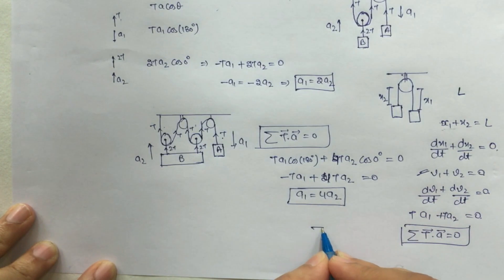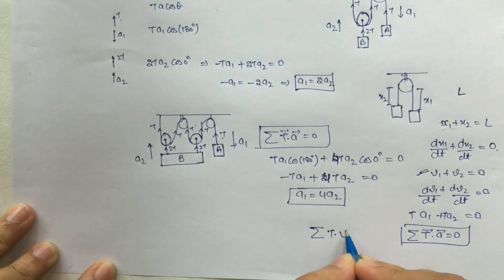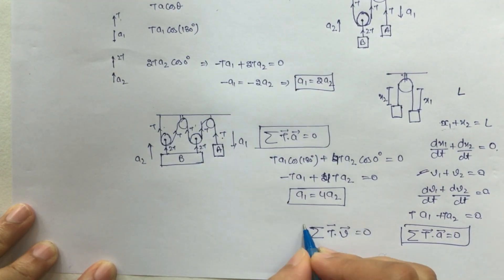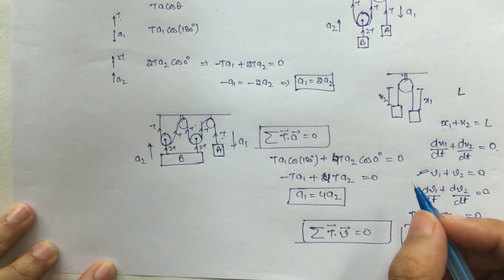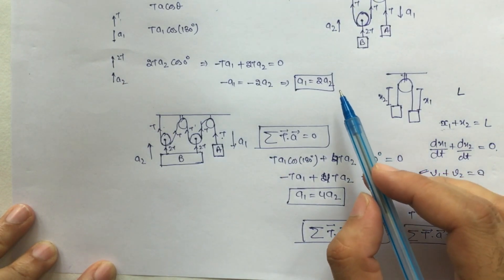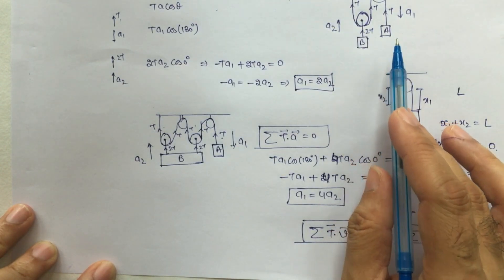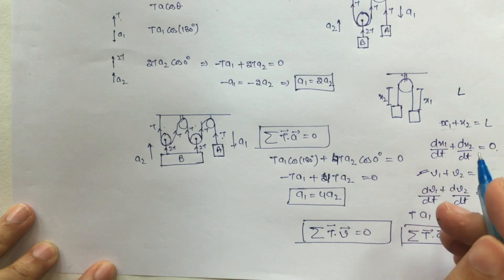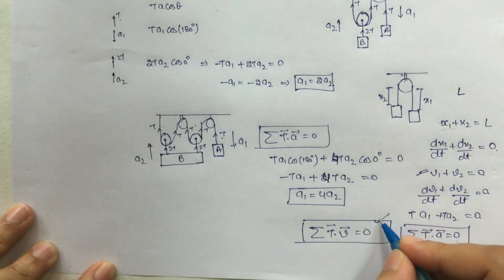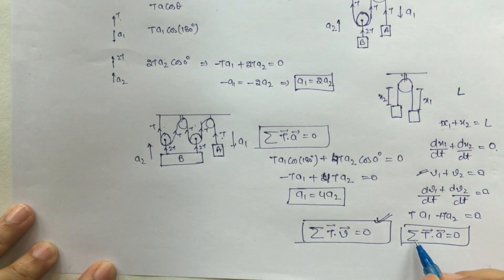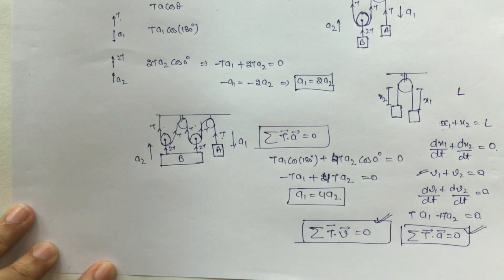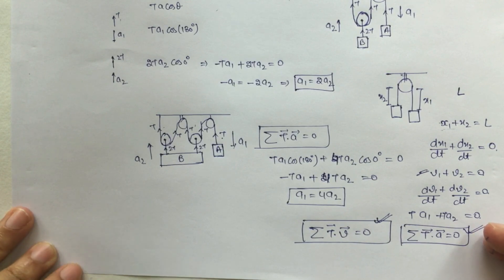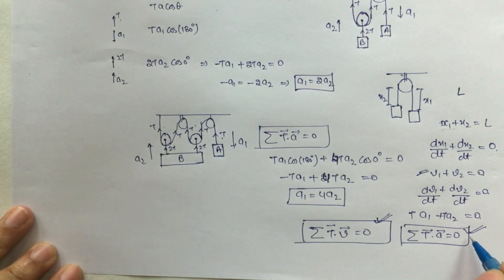So in any case, if you need to find the relation between velocities of multiple blocks you can use summation of T dot v equals zero, and if you need the relation between accelerations you can use summation of T dot a equals zero. In my further videos you will see how to solve many problems from H.C. Verma using this concept.